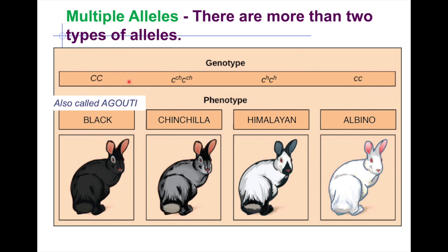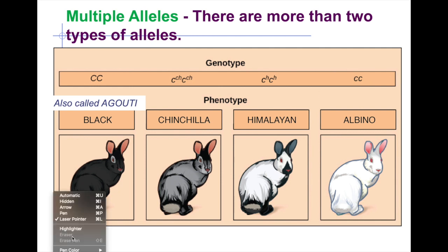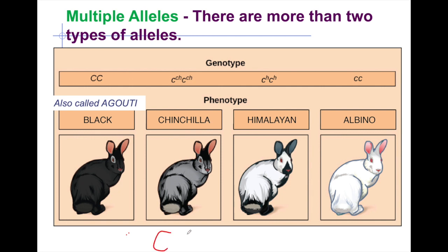Black is also called agouti. These are the genotypes needed to express each coat color. If a combination occurs — for example, if an organism is heterozygous — the allele with the stronger expression will be shown. Black is stronger than chinchilla, chinchilla is stronger than Himalayan, and Himalayan has stronger expression than albino. For example, if you have genotype CH CH (chinchilla and Himalayan), since chinchilla is higher in the hierarchy, chinchilla will be expressed.